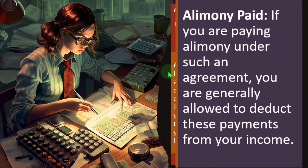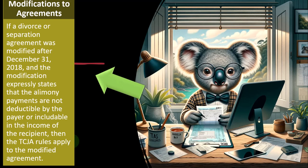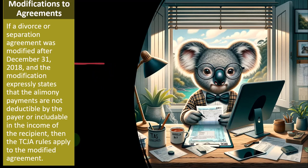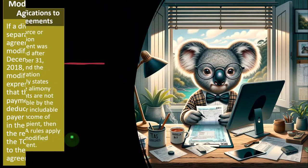Alimony paid: if you are paying alimony under an agreement executed before January 1st, 2019, you are generally allowed to deduct these payments from your income. Modifications to agreements: if a divorce or separation agreement was modified after December 31st, 2018, and the modification expressly states that the alimony payments are not deductible by the payer or included in the income of the recipient, then the TCJA rules apply to the modified agreement. Be careful modifying it because this is a significant impact — make sure you're taking that into consideration.